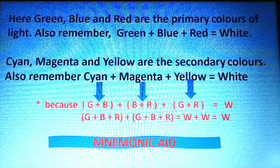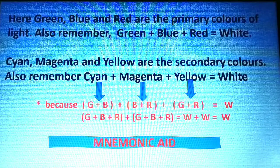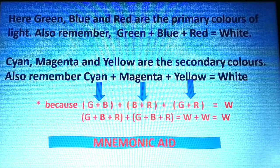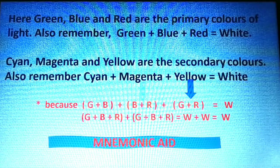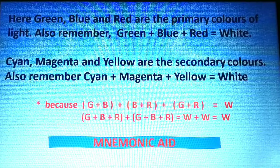Green, blue, and red are the primary colors of light. Also remember: green plus blue plus red equals white. And yellow equals green plus red, so yellow plus blue also equals white. Cyan, magenta, and yellow are the secondary colors. Also remember: cyan plus magenta plus yellow equals white, because cyan is green plus blue, magenta is blue plus red.